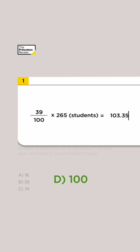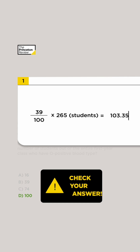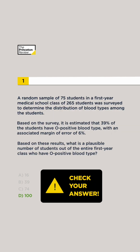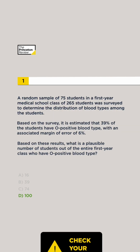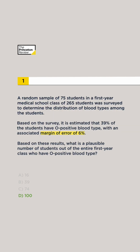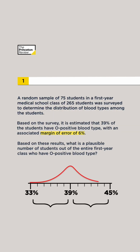Only D is close to 103.35, so it is likely correct. But we have to check. Calculate the range based on the margin of error, which is 6%, meaning that results within a range of 6% above and below are reasonable.